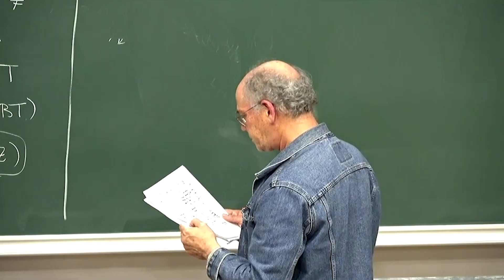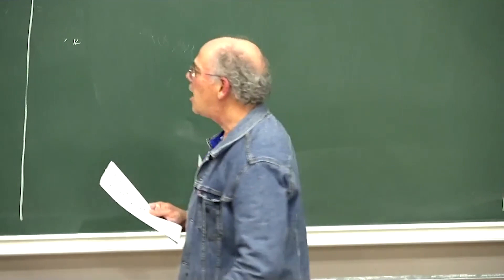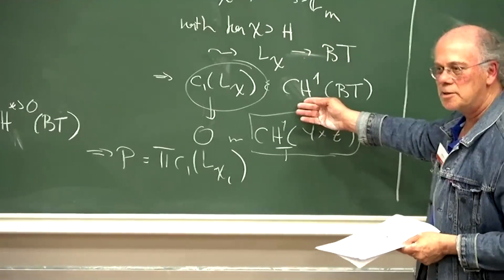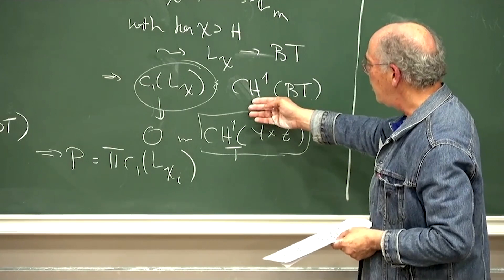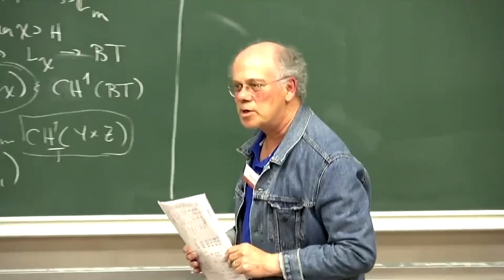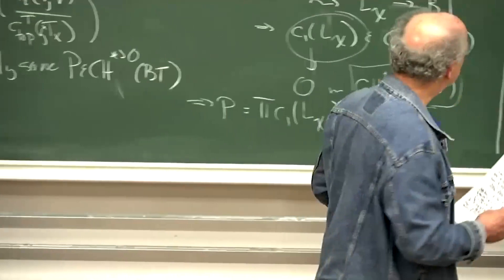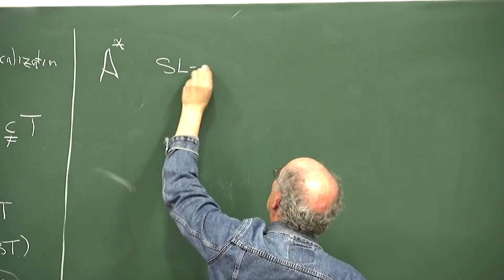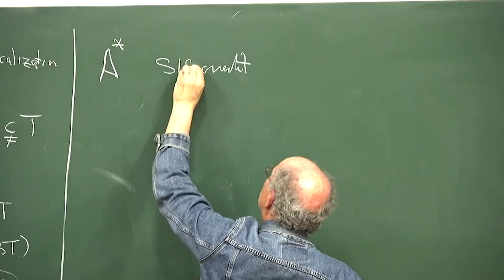In fact the argument that Sharanya gave works completely well for other theories besides oriented theories. It works fine for oriented theories — if you take some oriented theory A instead of the Chow ring, the computation of A^*(BT) is essentially the same: you get A^*(base field) joined on the E_i's — same argument, same construction.